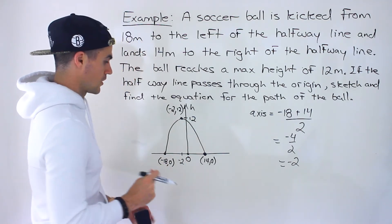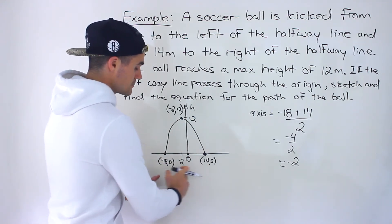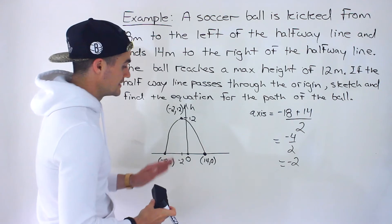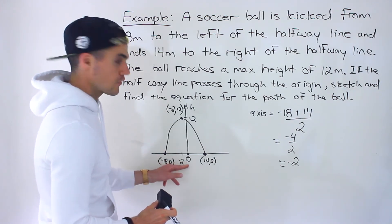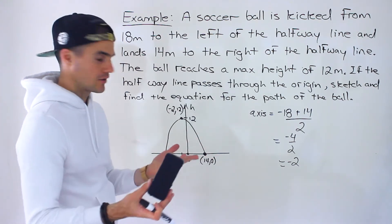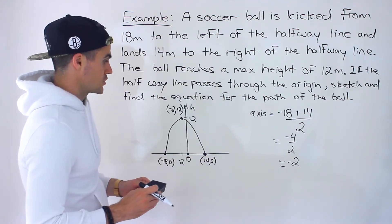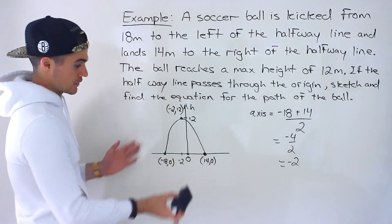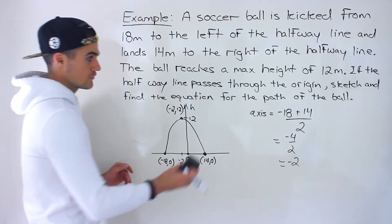While the x value is basically the distance from the halfway line on the ground. So hopefully you've got everything I just mentioned there. That's the diagram right there of the path of the ball.